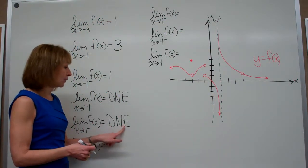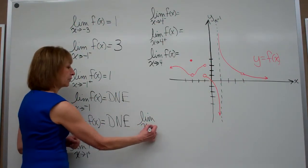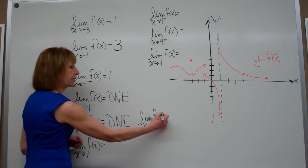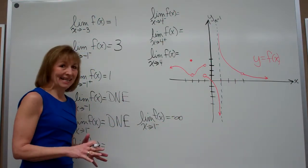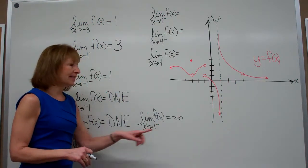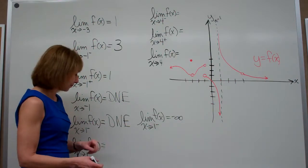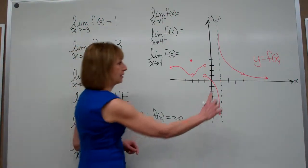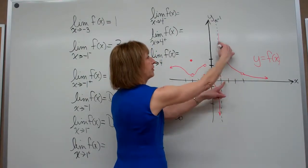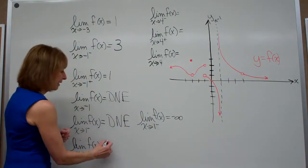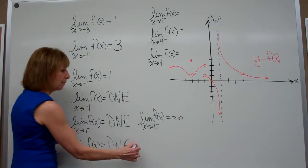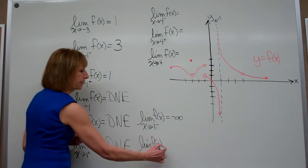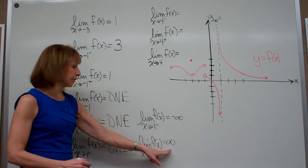Sometimes they might write that the limit as x approaches 1 from the left of this particular function is negative infinity — it's not saying it exists. That's unbounded behavior; the limit does not exist, but it tells you the manner in which it doesn't exist. For the limit of the function values as x approaches 1 from the right: here's my x value of 1, coming in from the right, and my function values are going off to positive infinity. Again, the limit does not exist — unbounded behavior going off to positive infinity.